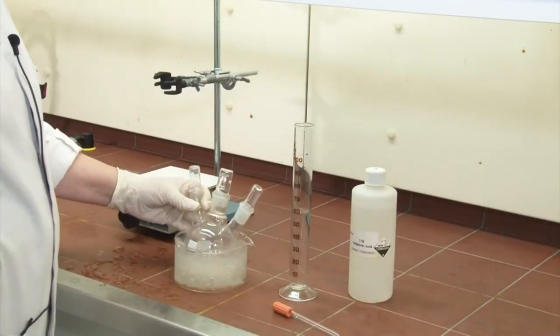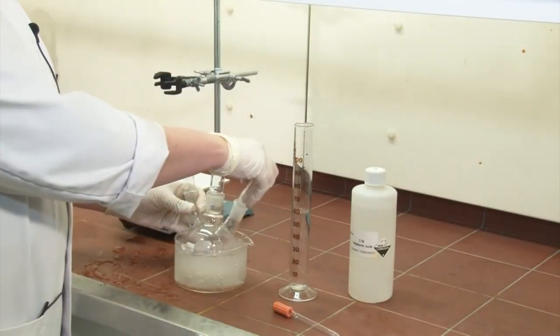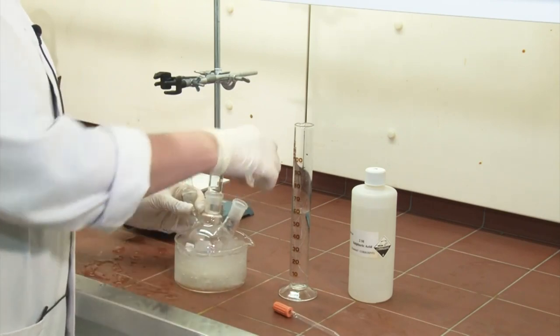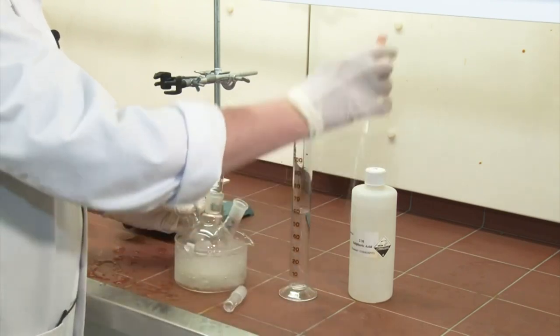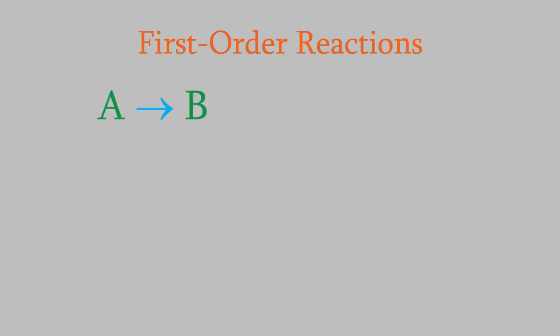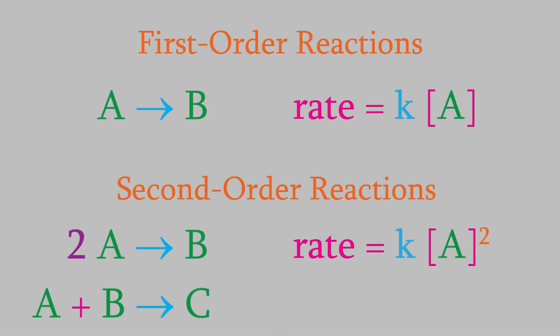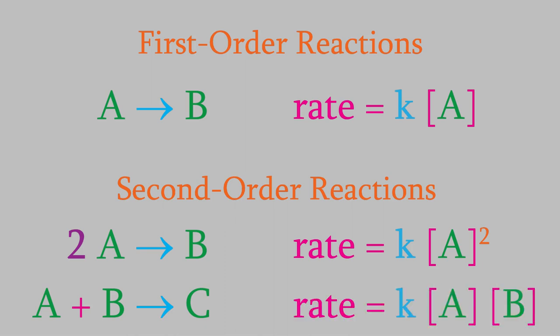To start with, think about the generic chemical reactions we used when we first started talking about first and second order reactions. We saw that the rate of a first order reaction usually only depends on one reactant, so we can write the rate law like this. Meanwhile the rate of a second order reaction can depend on one reactant or two. If there's only one reactant, we write the rate law this way, and if there are two, we get this for the rate law.